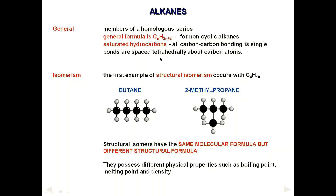Later on, we will talk about alkenes, where there is at least one double bond between carbon and carbon, and those are called unsaturated. So unsaturated means at least one carbon-carbon double bond, while saturated hydrocarbons have only single bonds between all carbon atoms.